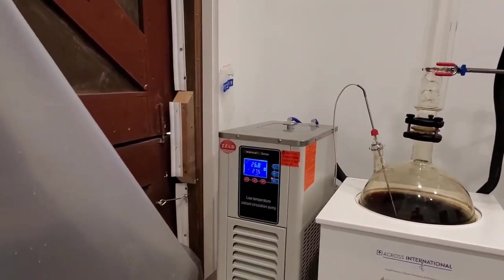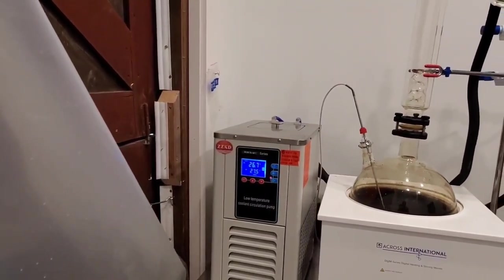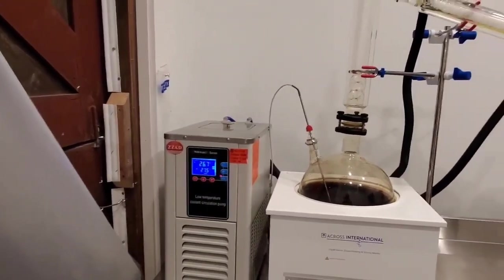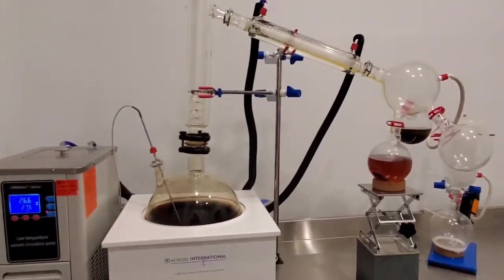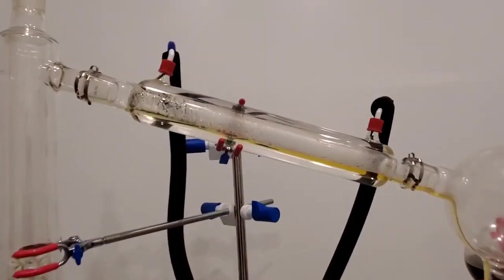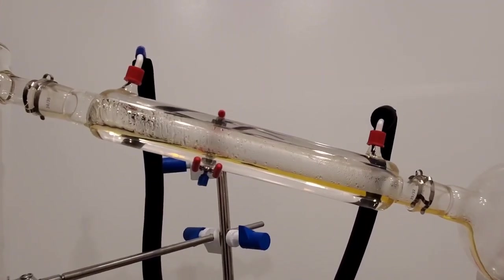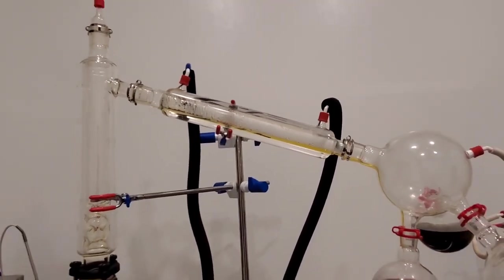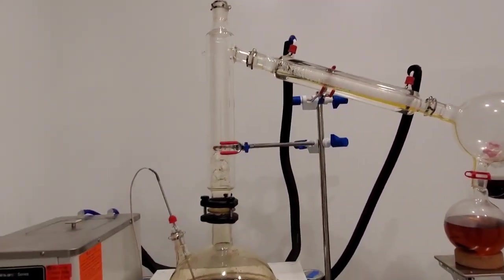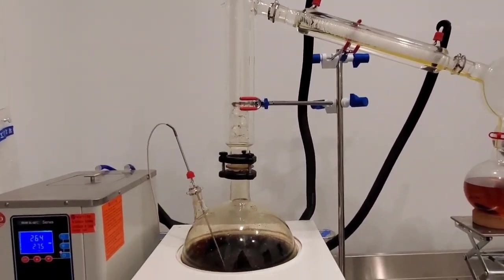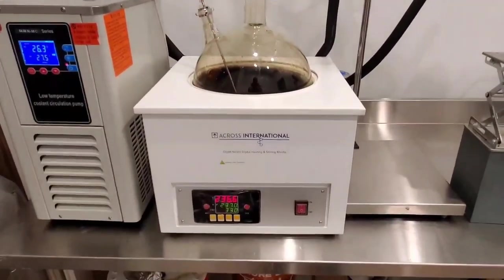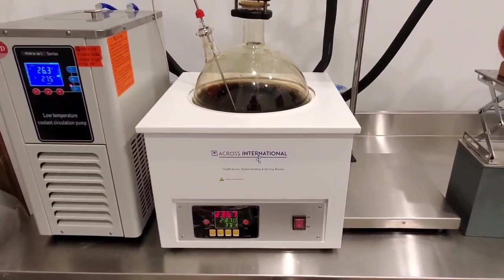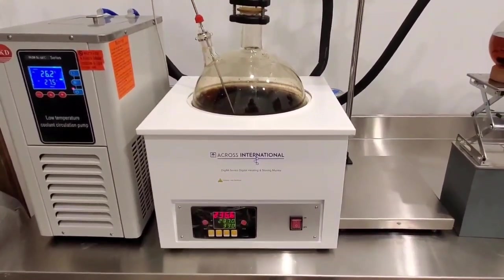First piece that we have here is a low temperature coolant circulation pump, and this is used to keep the condenser, which is right here, cool. And what this does is it takes the vapors that are created by heating up crude oil in this boiling flask, and it turns them back into liquids.